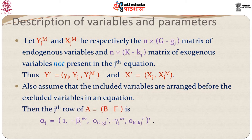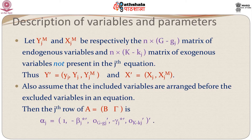Then the j-th row of A (which is [B, Gamma], the structural parameters) would be alpha_j, which is: 1 for the response y_j, then minus beta_j* prime for the included endogenous variables, then 0 for the excluded endogenous variables, then minus gamma_j* for the included exogenous variables, and finally 0 for the excluded exogenous variables.